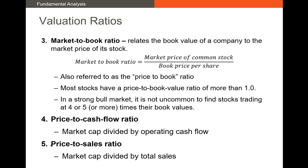Lastly among valuation ratios, the price-to-sales ratio can be calculated as market cap divided by total sales, or price per share divided by sales revenue per share. Just like the other valuation ratios, this tells us how much investors are willing to pay for a dollar of sales. The higher this number, the more highly investors value the growth prospects of the firm's sales.